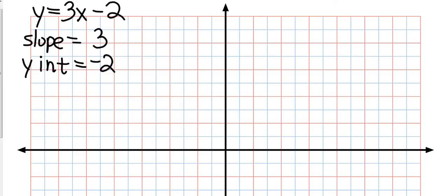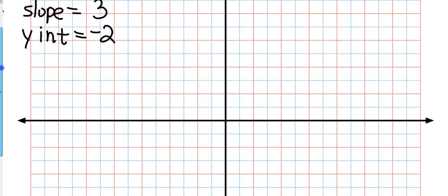So right away I can plot the y-intercept. I'm going to go on my y-axis, again that's my vertical axis, and I'm going to go to where y equals negative 2, and I'm going to put a point. So I'm going to move this down just a little bit. So there's where my y equals negative 2.